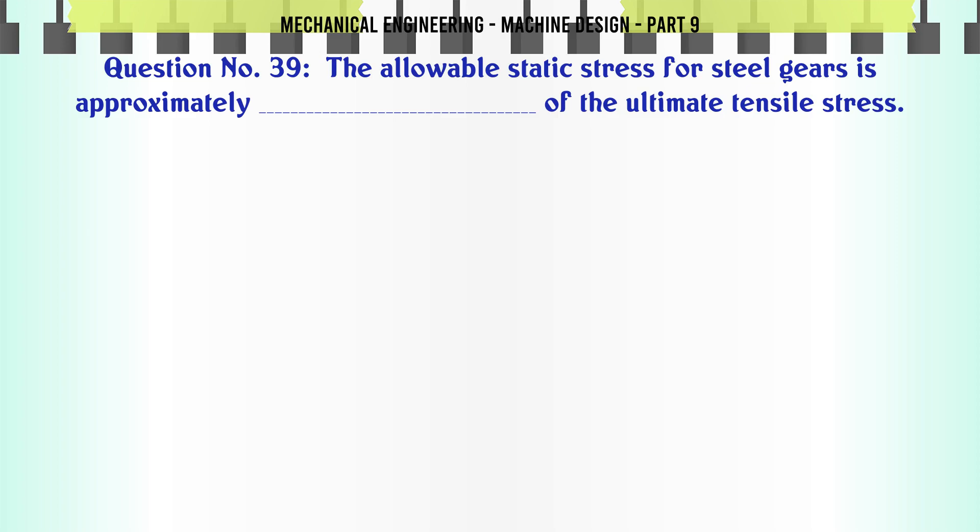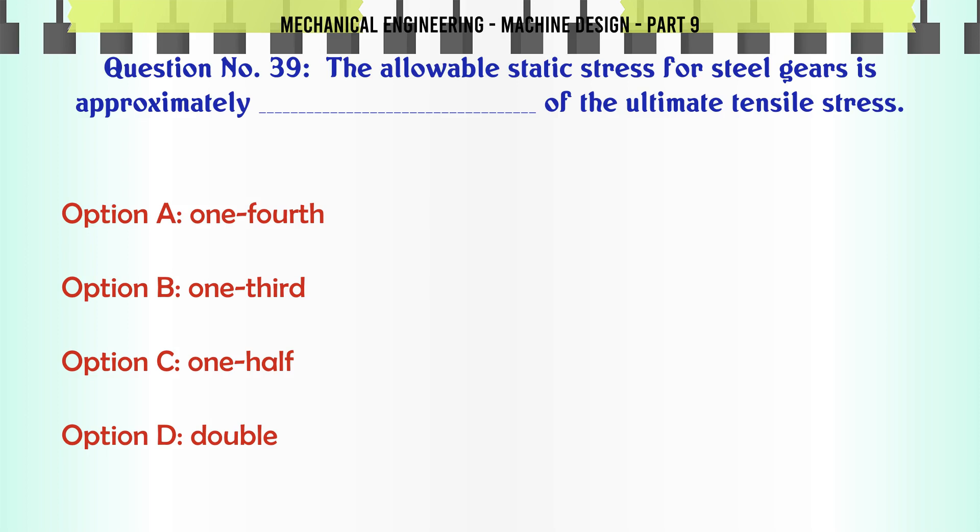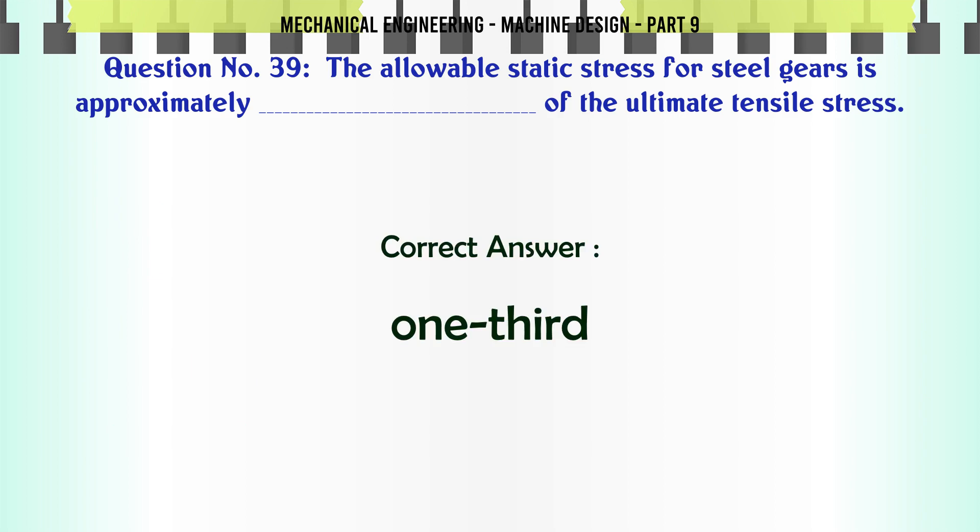The allowable static stress for steel gears is approximately of the ultimate tensile stress: A. One-fourth, B. One-third, C. One-half, D. Double. The correct answer is One-third.